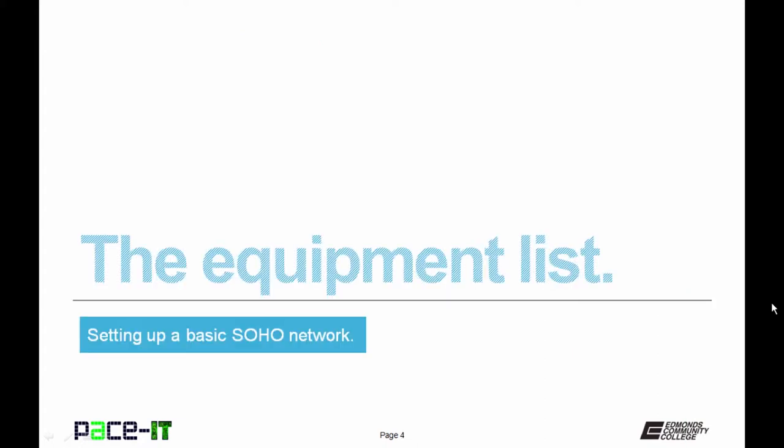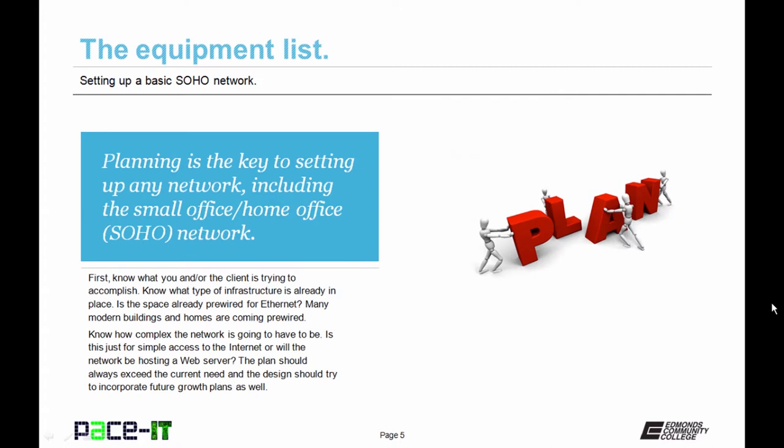We will begin by discussing your equipment list. Planning is the key to setting up any network, including the SOHO network. First you need to know what you and/or the client is trying to accomplish. Know what type of infrastructure is already in place — is the space already pre-wired for Ethernet? Many modern buildings and homes are coming pre-wired with Cat5E or higher grade network cable.